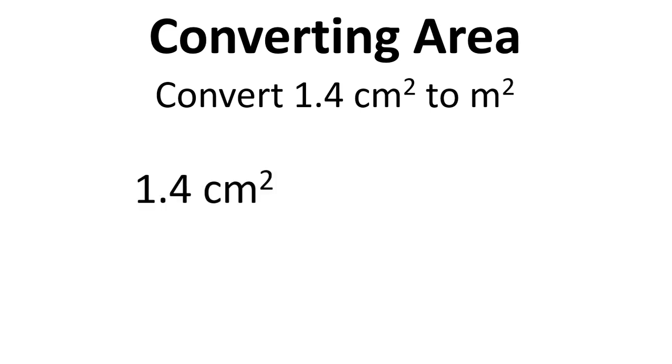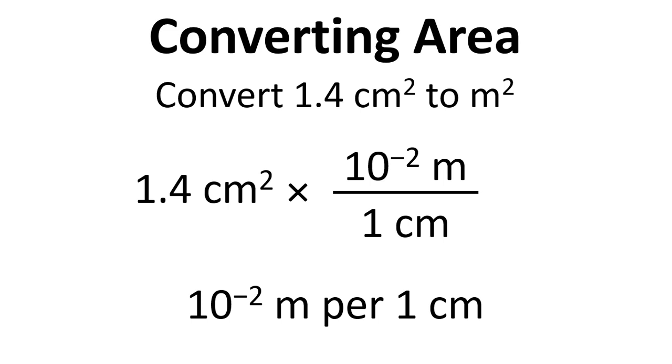We write down 1.4 cm² and we know that there's 10 to the minus 2 m per cm, so we multiply by 10 to the minus 2 m per 1 cm, but the units are squared for the area.